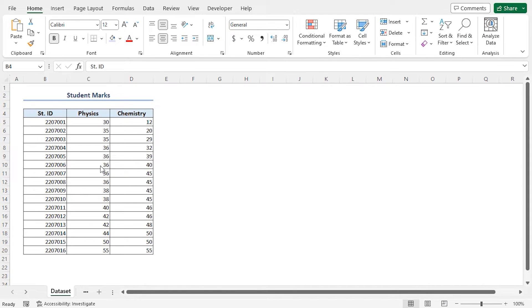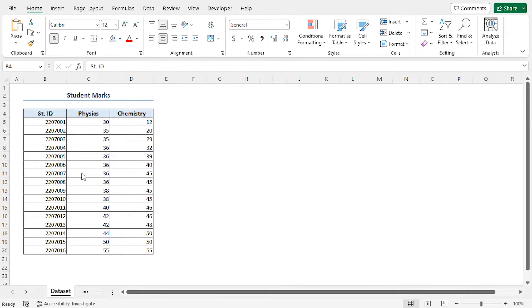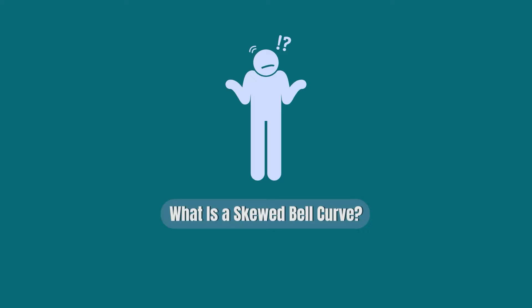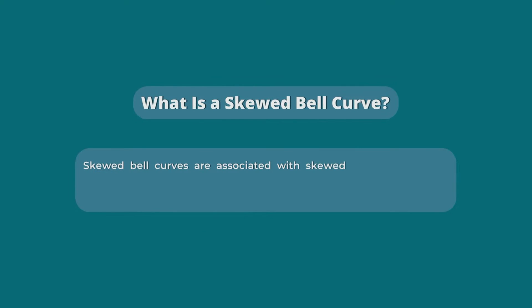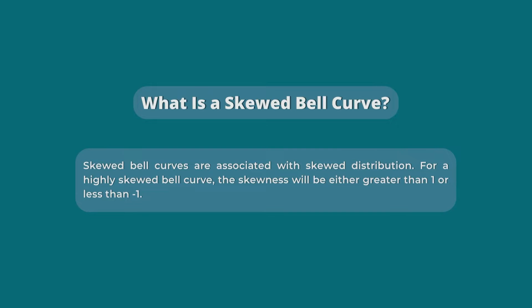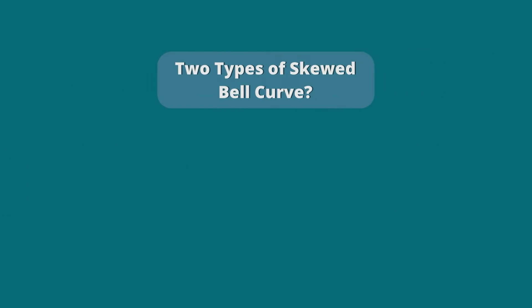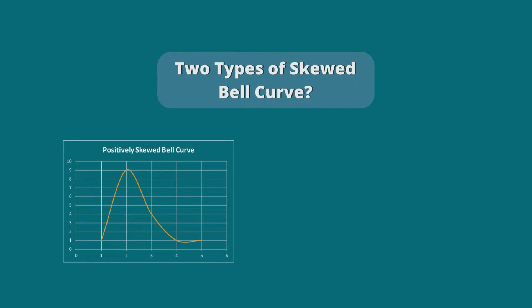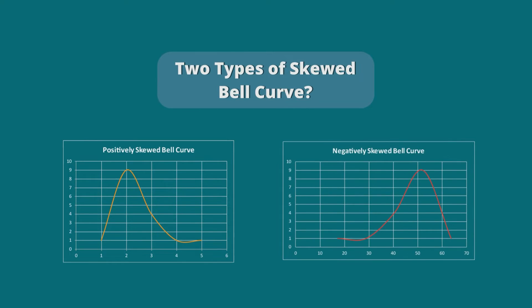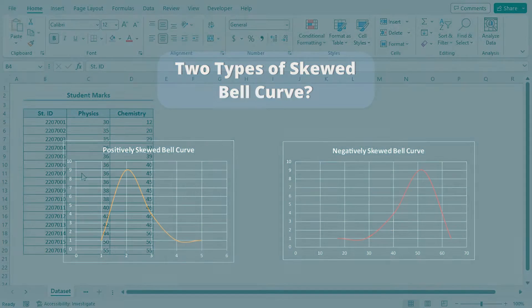For this tutorial, I'll be using Microsoft Excel 365. Before we begin, let's get up to speed on what a skewed bell curve is. Skewed bell curves are associated with asymmetric or skewed distributions. Generally, there are two types: positively skewed bell curves that have a long tail pointing towards the right, and negatively skewed bell curves that have a long tail pointing towards the left.